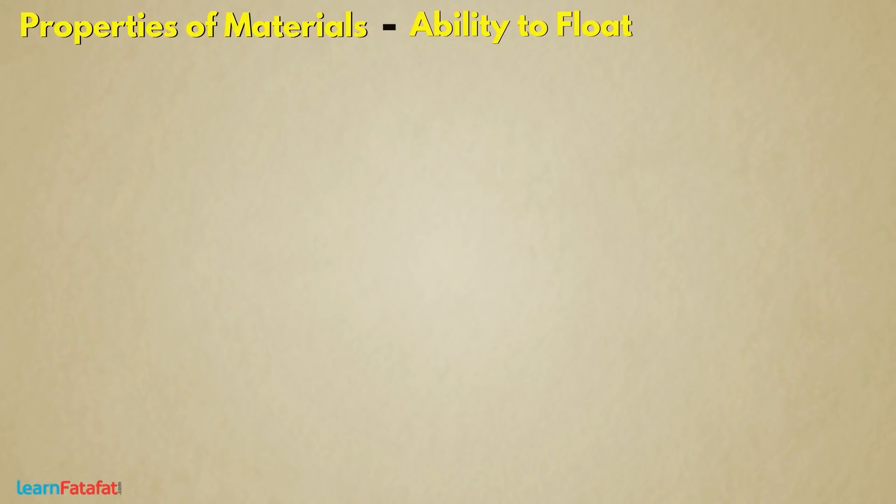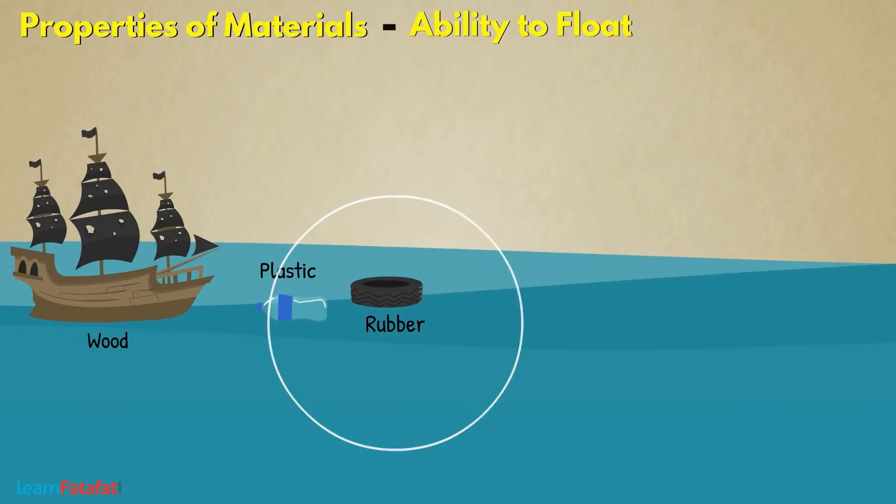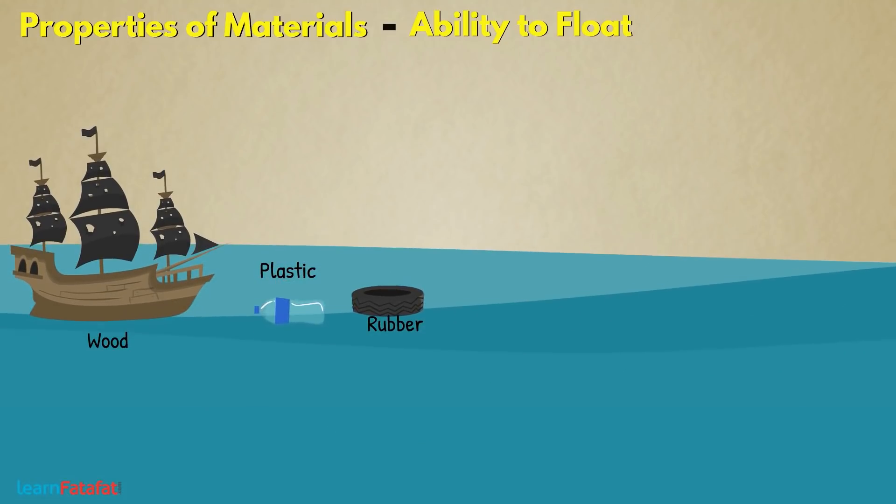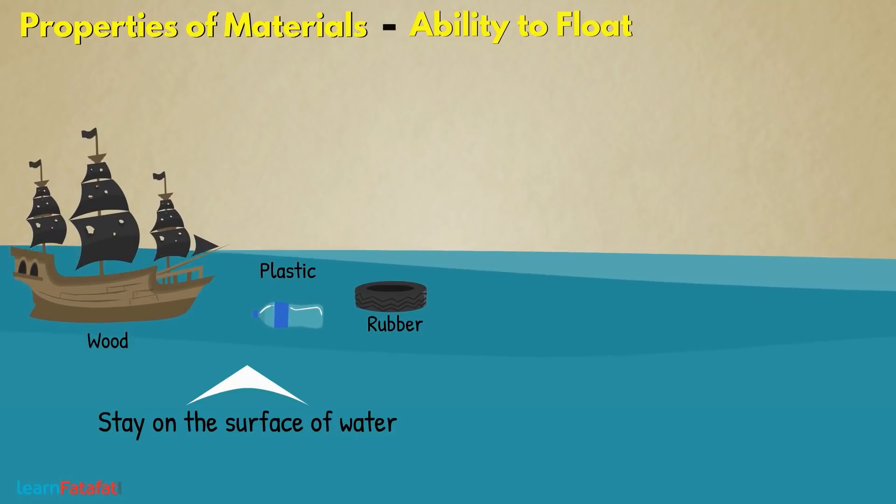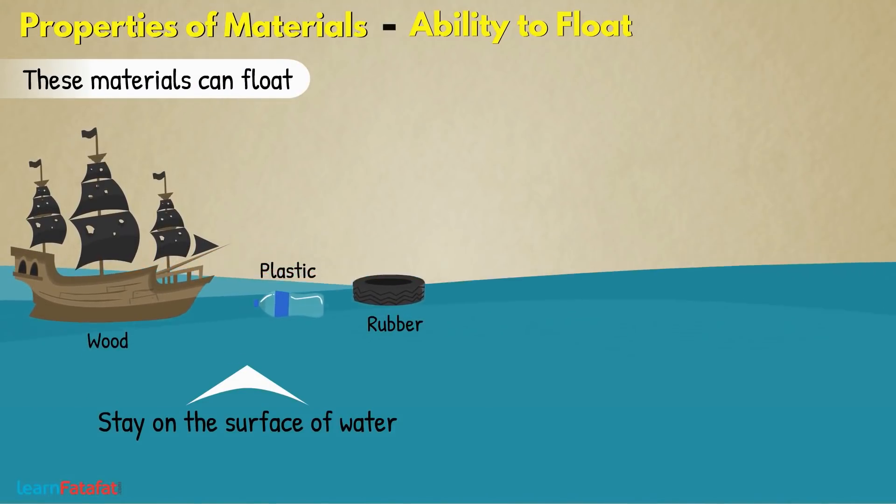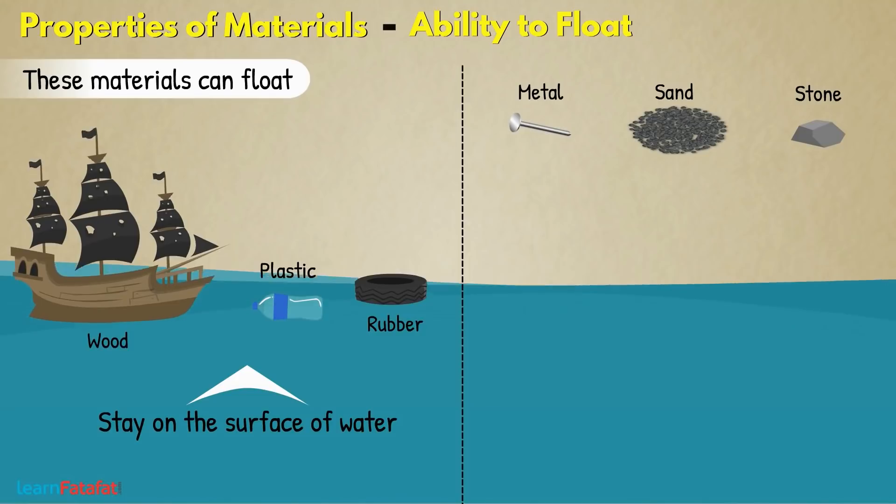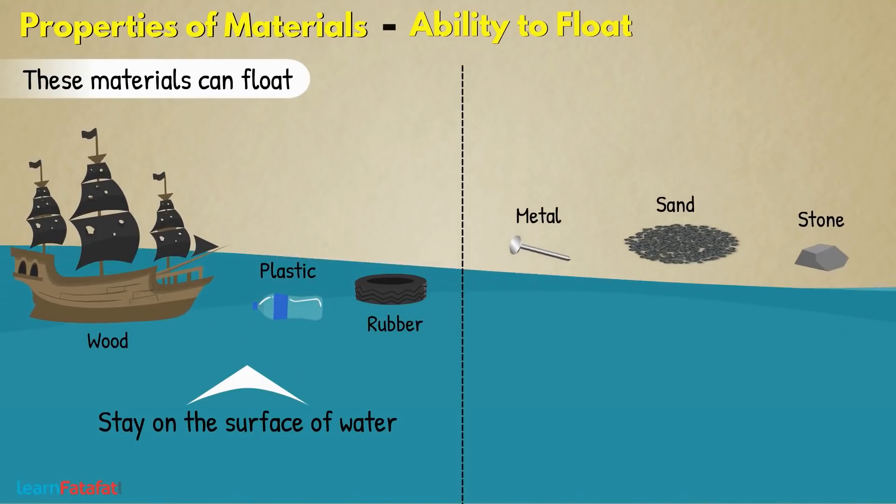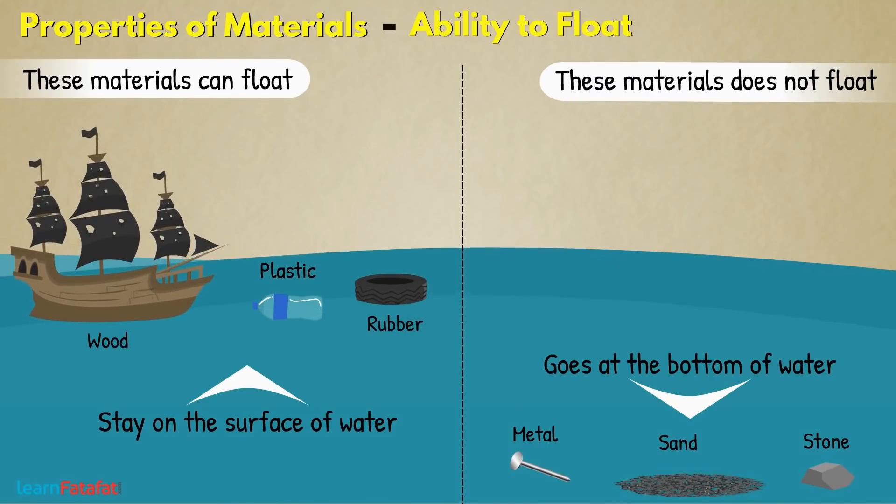Ability to float. Some materials such as wood, plastic, rubber, etc. have ability to stay on the surface of water. We say that these materials can float on water. There are other materials such as metals, sand, stone, etc. which when dropped in water go to the bottom. That means, these materials do not float on water.